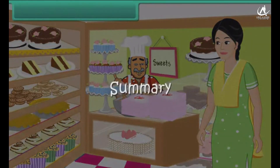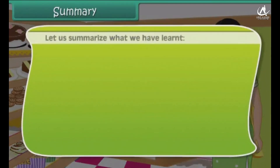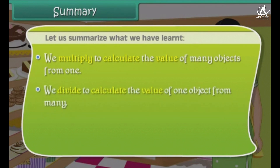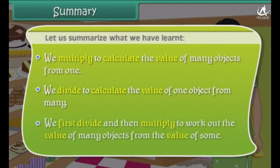Summary. Let us summarize what we have learnt. We multiply to calculate the value of many objects from one. We first divide and then multiply to work out the value of many objects from the value of some.